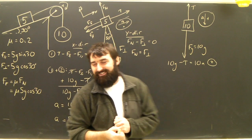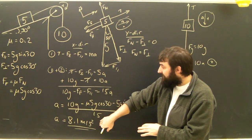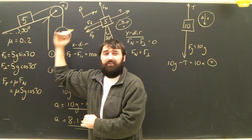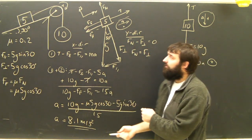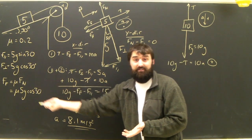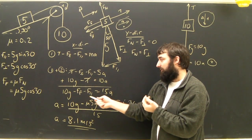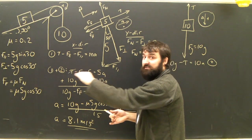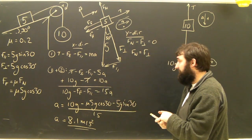It's kind of interesting that the acceleration is greater than it was when the 5kg object was on a horizontal surface. You'd think, since there's this extra force slowing the whole system down, that the acceleration should be less. But of course, the normal force was also decreased, which means the friction has decreased. Ultimately, putting it at an angle of 30 degrees decreases the friction more than it increases the gravity component, so the acceleration is much higher than in the horizontal surface situation.